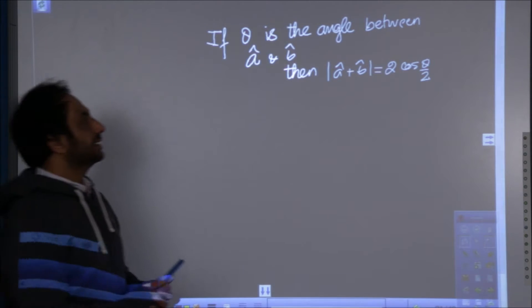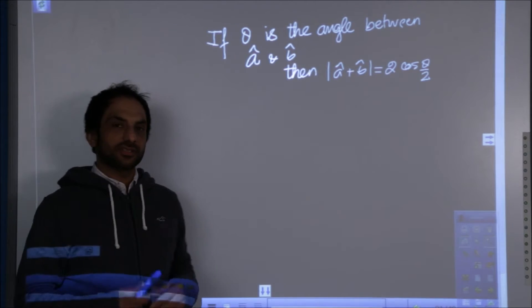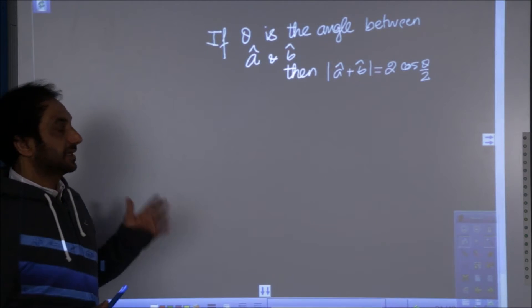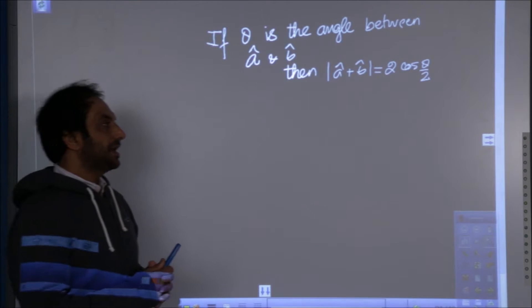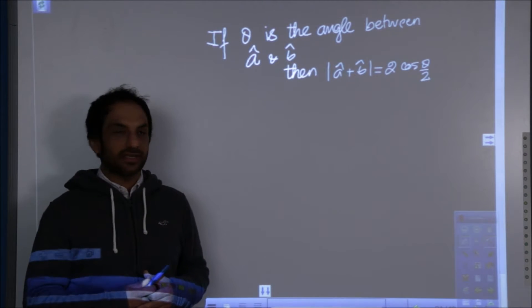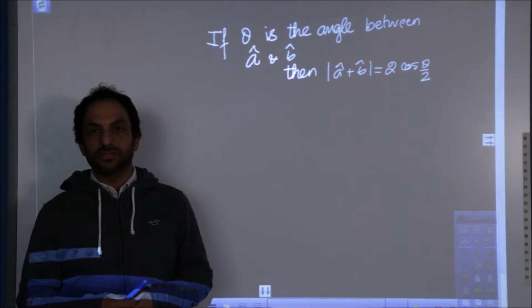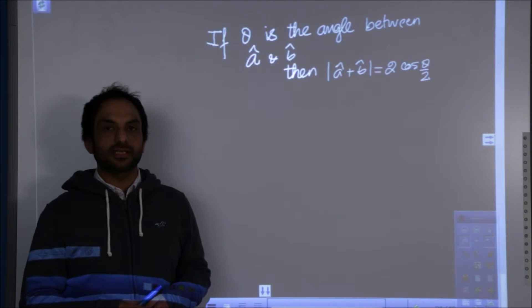If theta is the angle between the two unit vectors a and b, then show that modulus of a vector plus b vector is equal to 2 times cos theta by 2.